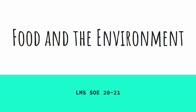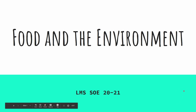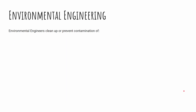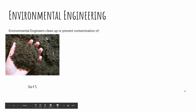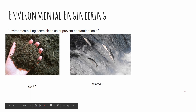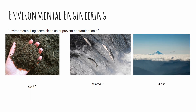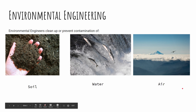Hey engineers, this is Mr. Hernandez, and in this week's lesson we're going to be looking at food through the lens of environmental engineering. Like we learned about last week from Tamar, environmental engineering is about cleaning up or preventing the contamination of the soil, the water, and the air. So we're going to be looking at all three of those and how they're affected by food production in the modern world.